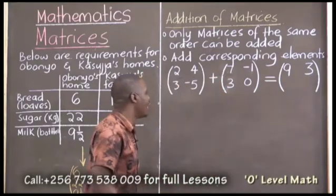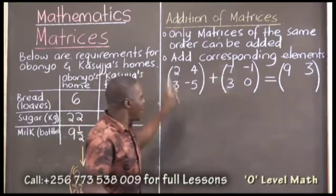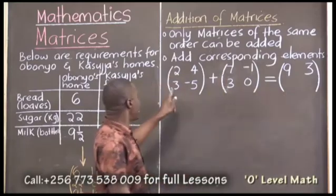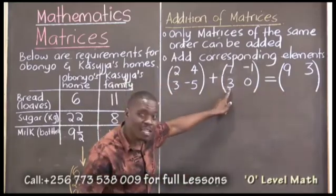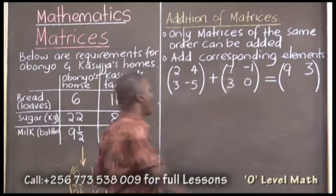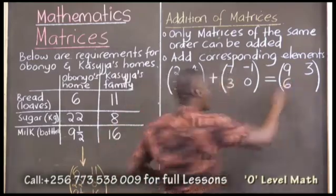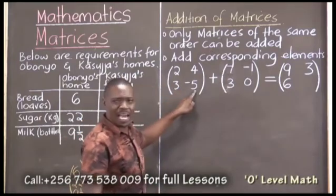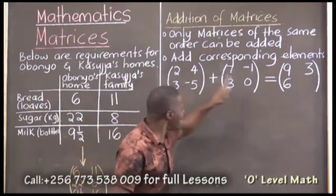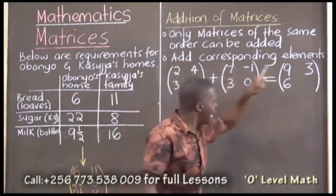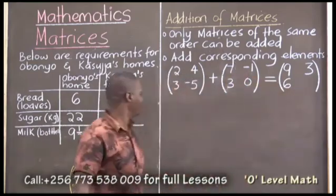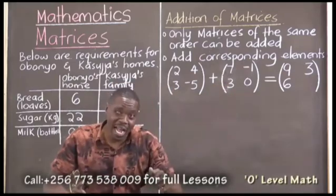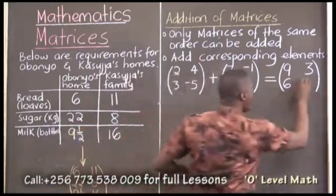Now we are going down. The first number down plus the first number down gives us the first answer down. A 3 plus a 3 to give us a what? A 6. Wonderful. We have a 6 there. Then the second element down plus the second element down gives us the second answer down. A negative 5 plus a 0 to give us a what? A negative 5. Wonderful.